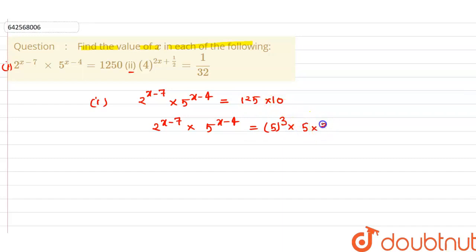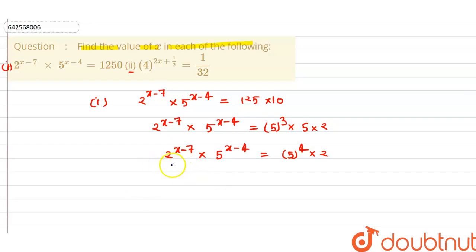We can write 125 as 5 raised to the power 3, and 10 as 5 into 2. Further simplifying, 2^(x-7) into 5^(x-4) equals 5 raised to the power 4 into 2 raised to the power 1.